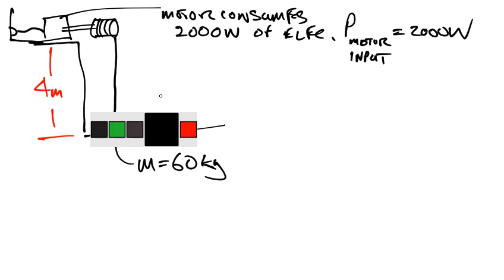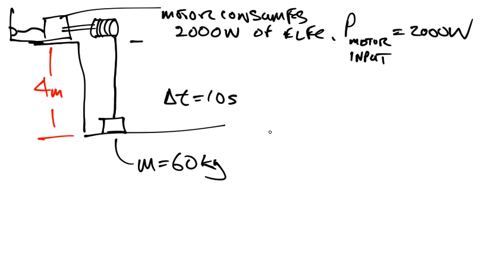And what we know also is that the time taken to lift this mass up to the top here is 10 seconds. So what we're looking for is the efficiency of the motor. The way we're going to do this is we're going to say from the equation of efficiency is equal to work output divided by work input times 100.